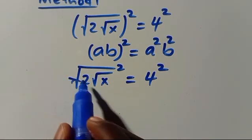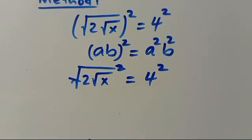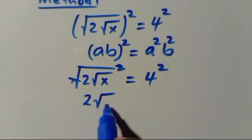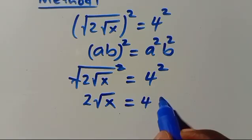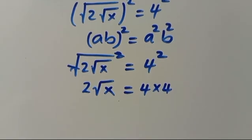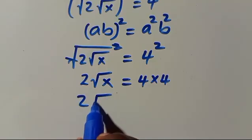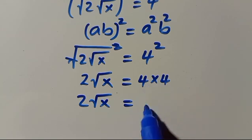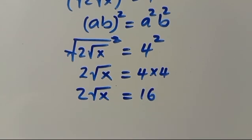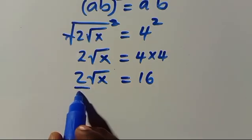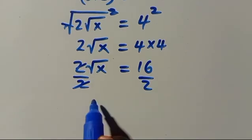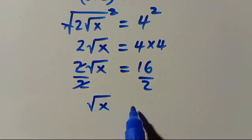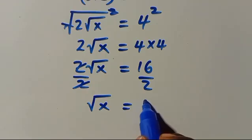The square and square root cancel out, so we have 2 multiplied by √x equals 4², which is 4 times 4 = 16. Dividing both sides by 2, the 2s cancel and we have √x = 16 ÷ 2 = 8.